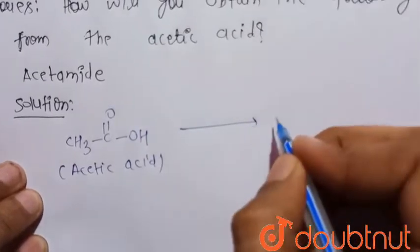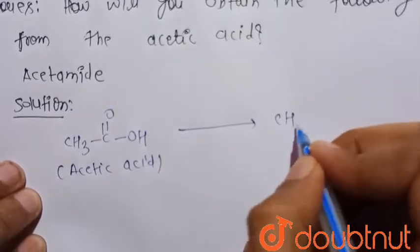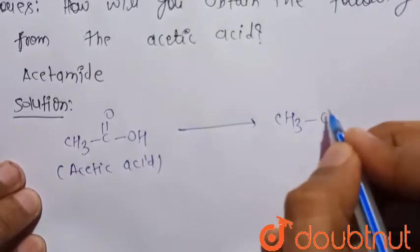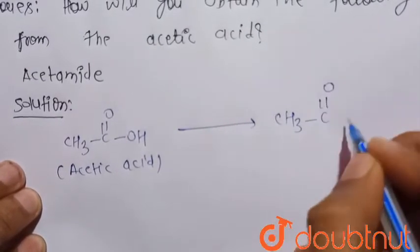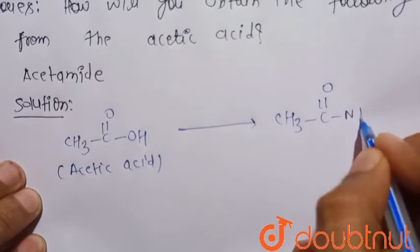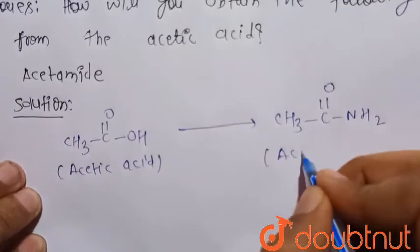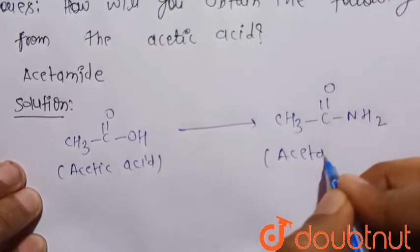We have to prepare acetamide, that is CH₃C(=O)NH₂. This is the acetamide.